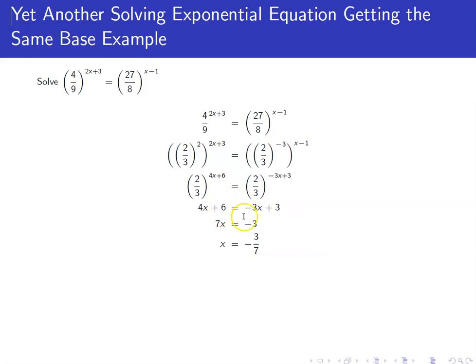And then now we can set our exponents equal to each other. Have the equation 4x plus 6 equals negative 3x plus 3. And solving for x gives you negative 3 sevenths.